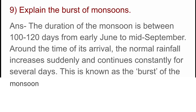Explain the burst of monsoons. The duration of the monsoon is between 100 to 120 days from early June to mid-September. Around the time of its arrival, the normal rainfall increases suddenly and continues constantly for several days. This is known as the burst of monsoon.